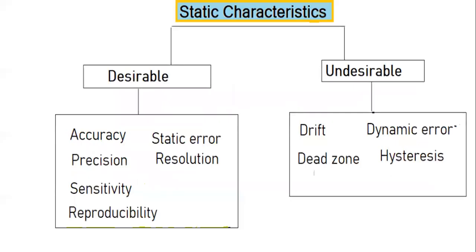Static characteristics can broadly be classified as desirable and undesirable. Desirable characteristics include accuracy, precision, sensitivity, reproducibility, static error, and resolution. Accuracy and static error go hand in hand. Undesirable characteristics include drift, dynamic error, dead zone, and hysteresis. Linearity will also be covered.